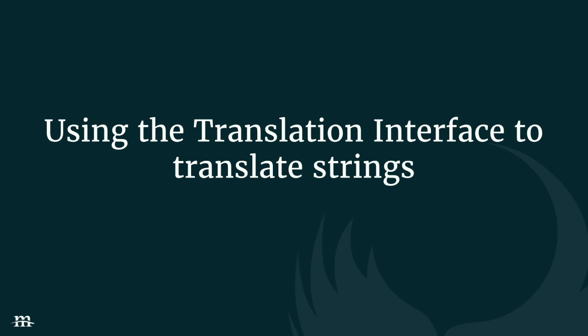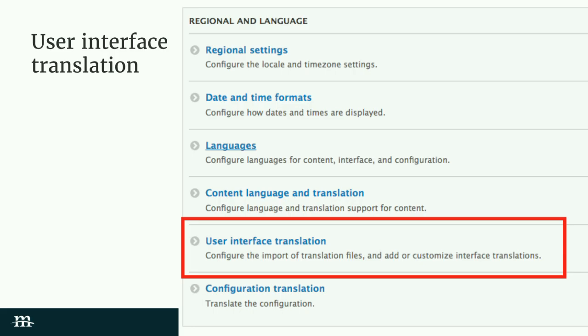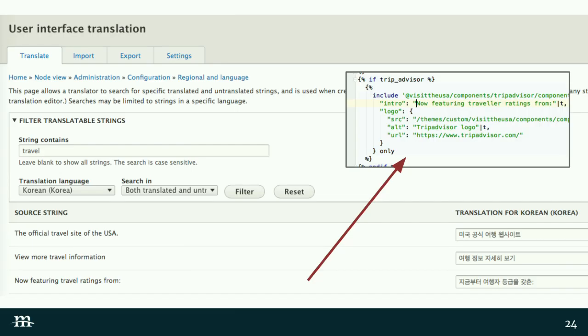Now we're going to go to the User Interface Translation page. This is similar to previous Drupal versions. Basically, this is like a search and replace action. Think about all the button text, all the other miscellaneous text strings you have in template files — this is text you usually want translated. As long as you use the translate function in Drupal, a.k.a. the T function, Drupal will know how to keep track of those strings, and they will show up here. There are a couple of gotchas we'll talk you through in a bit.